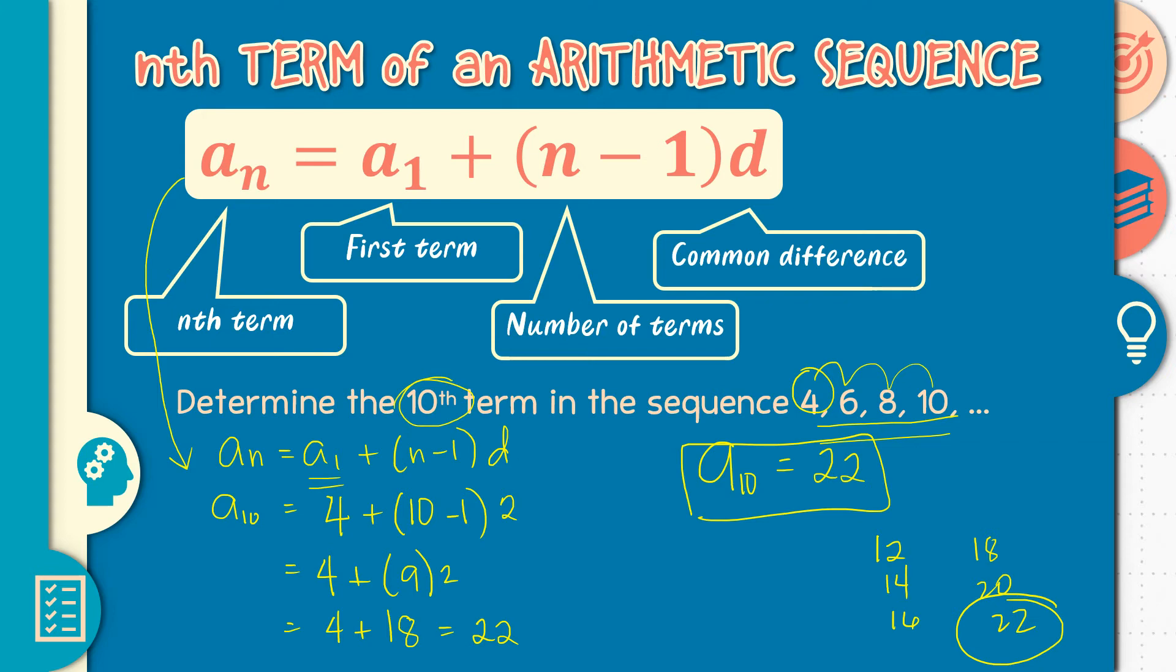Kung ididiretso natin yan, we have 10, 12, 14, 16, 18, 20, 22. Ayan yung ikasampo, 22. So imbis na ikaw ay maglista ng pagkahaba-haba, you are going to use this nth term for an arithmetic sequence. Kasi what if ang itanong sa'yo ay masyado ng malayo na term? Hindi na kaya ng powers ng ating paglilista. So mas madali na gumamit ka na lang ng ating formula for the nth term.